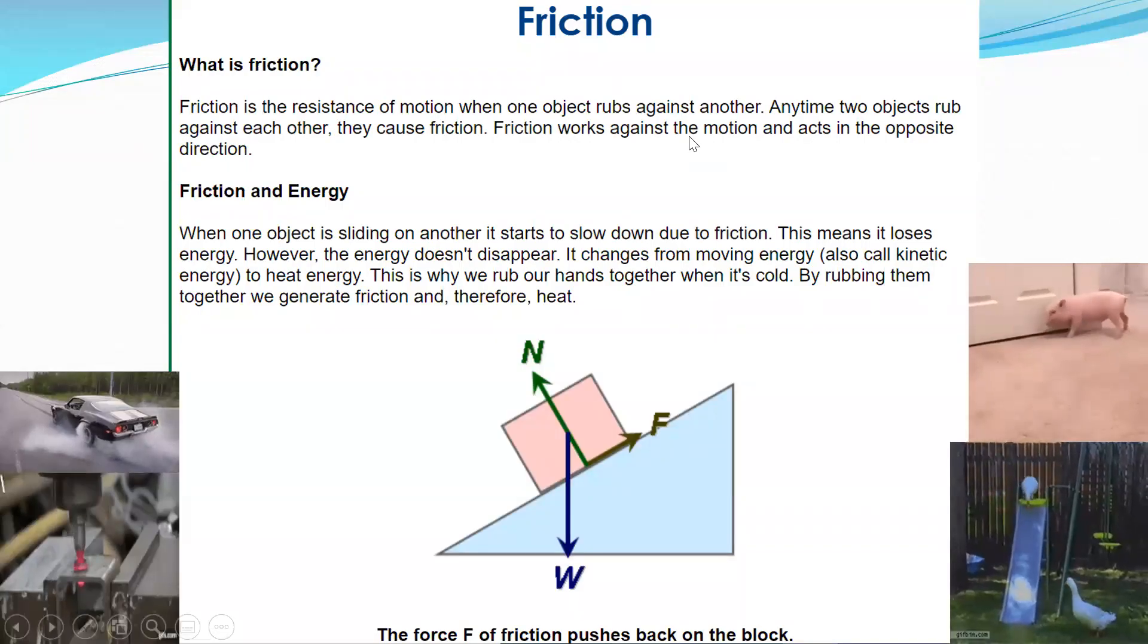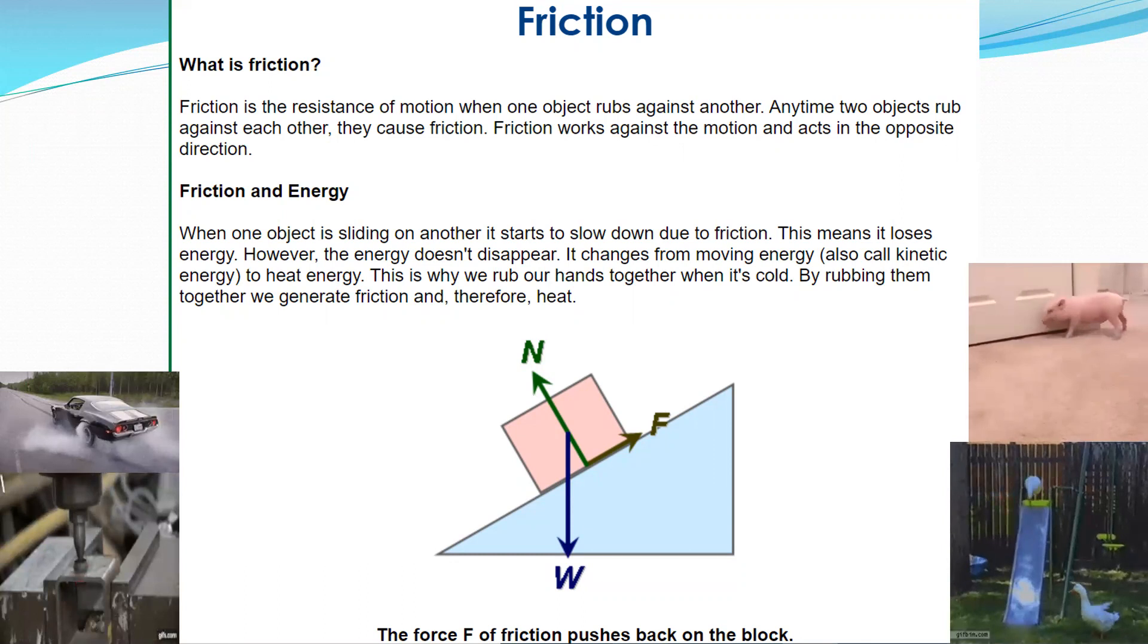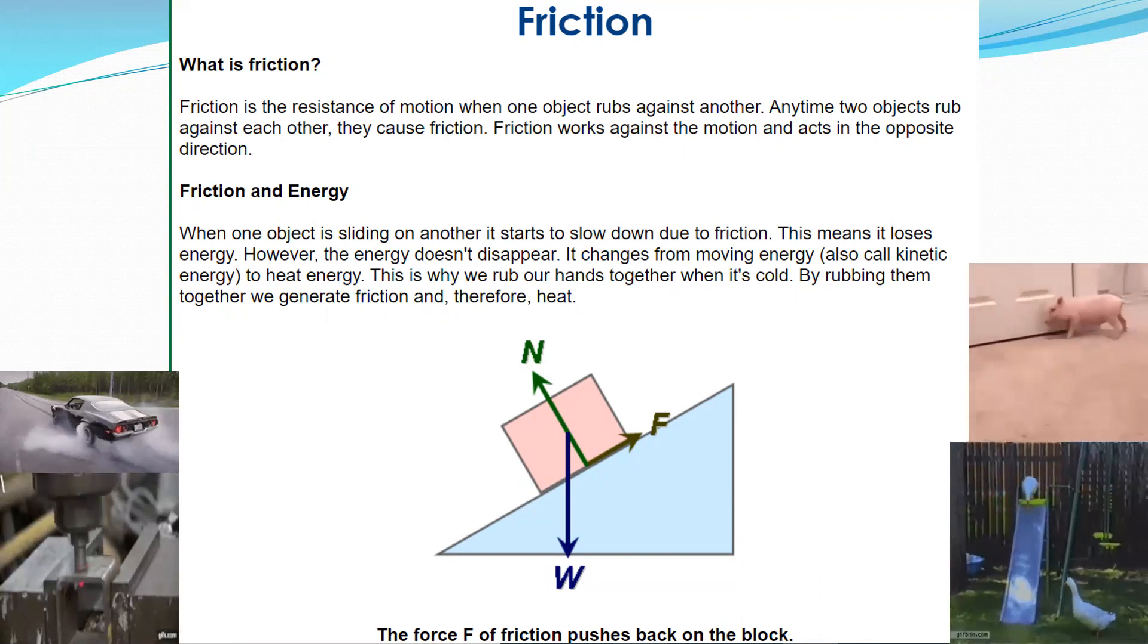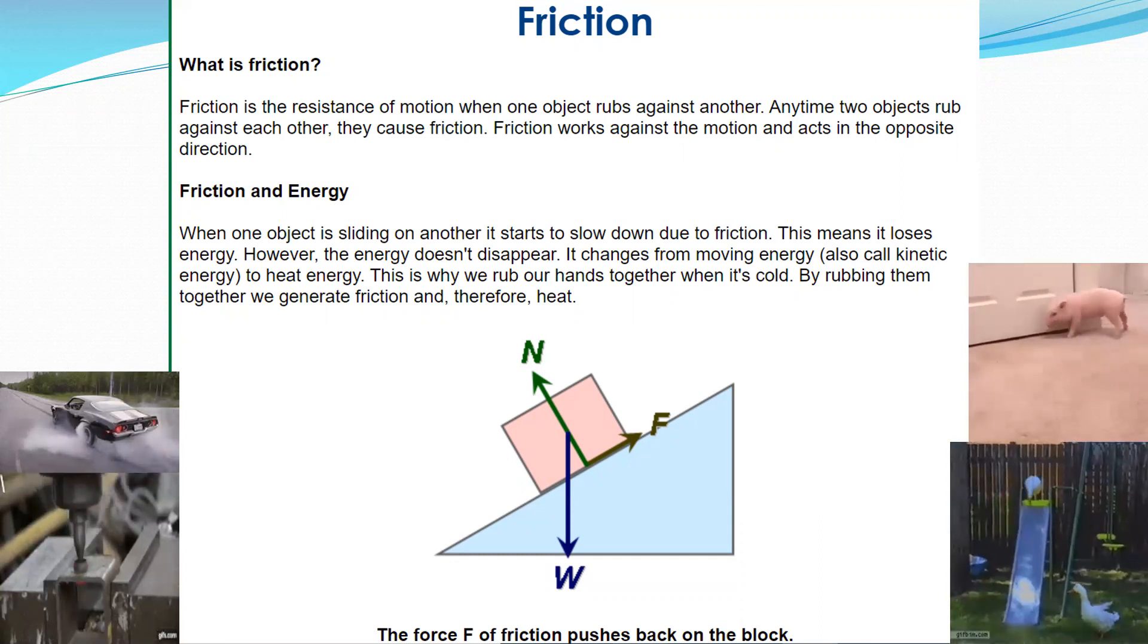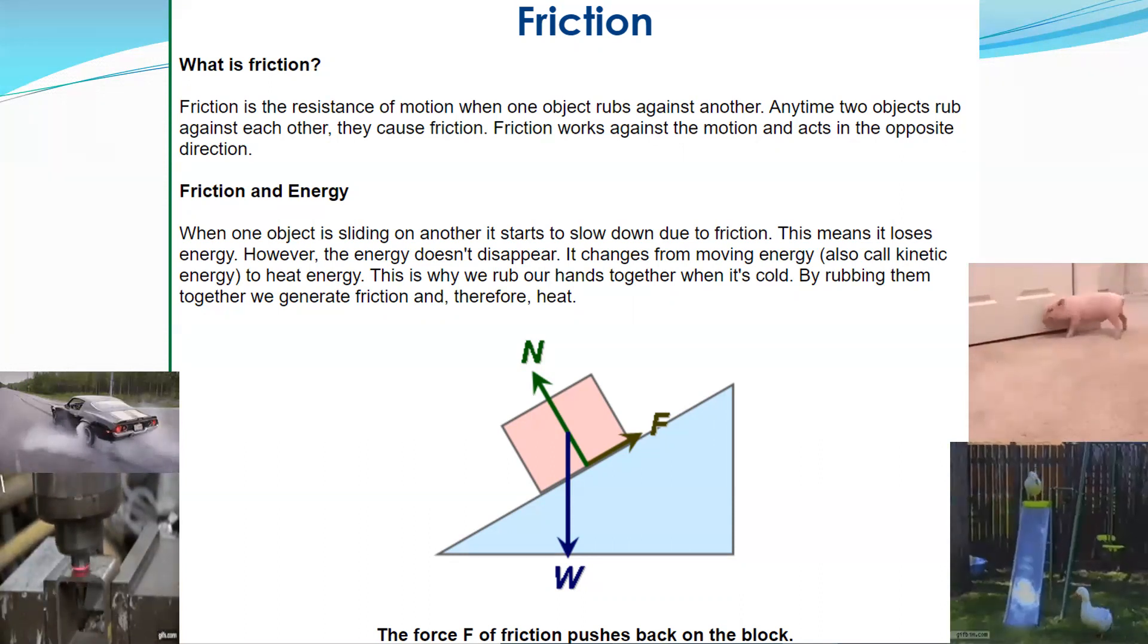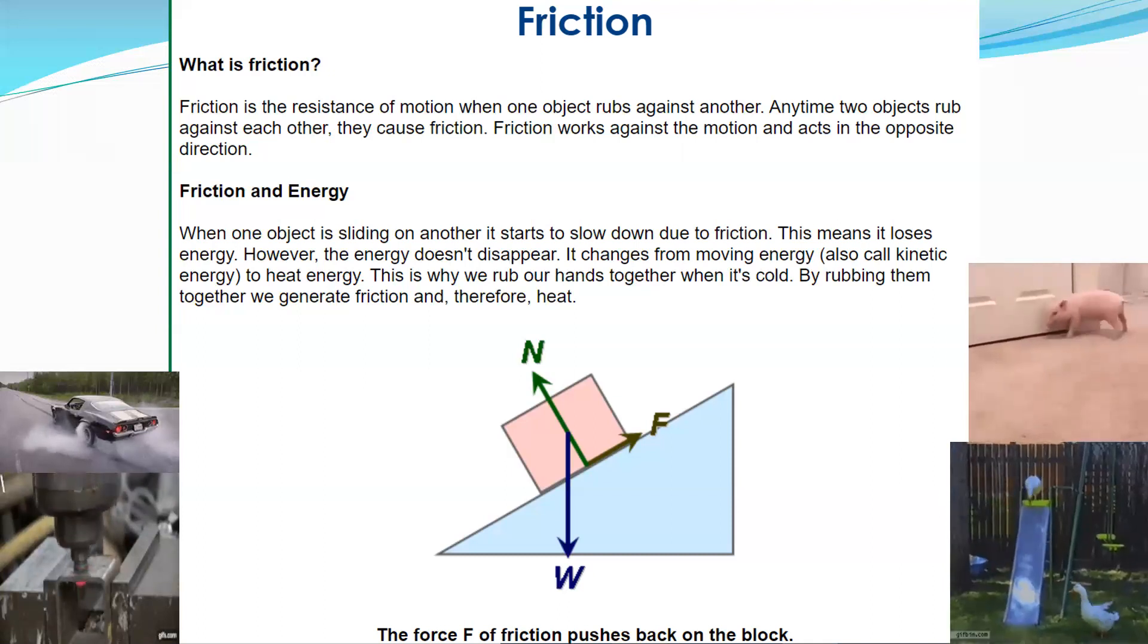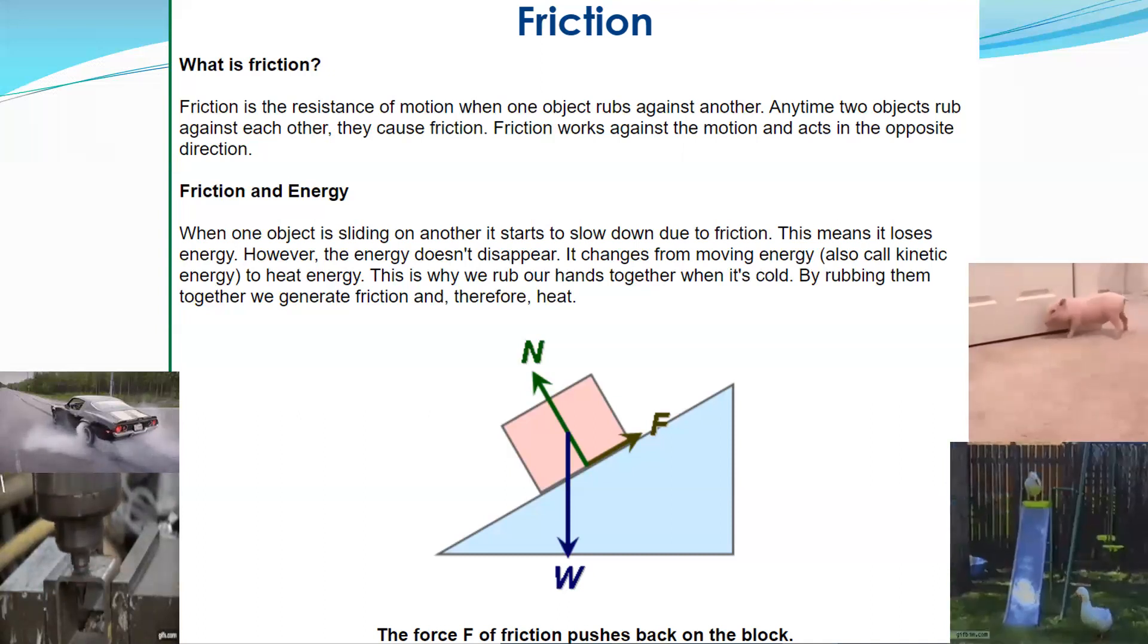Then we have friction. Friction is the resistance of motion when an object rubs against another. Anytime two objects rub up against each other, they cause friction. Friction works against motion and acts in the opposite direction. When one object is sliding on another, it starts to slow down due to friction. This means it loses energy. However, the energy doesn't disappear. It changes from moving energy, which is also known as kinetic energy, to heat energy. This is why when we rub our hands when it's cold, by rubbing them together, we generate friction, and therefore, it creates heat.